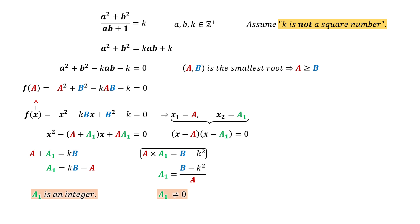Since A1 is the root of this equation, F of A1 equals 0, we can rearrange the equation as A1 square plus B square over A1B plus 1 equal K.